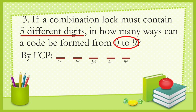Once the first digit is chosen, we deduct one, leaving nine choices for the second digit. We deduct again, leaving eight choices for the third digit, then seven choices for the fourth digit, and six choices for the fifth digit. Multiplying the choices gives 30,240.